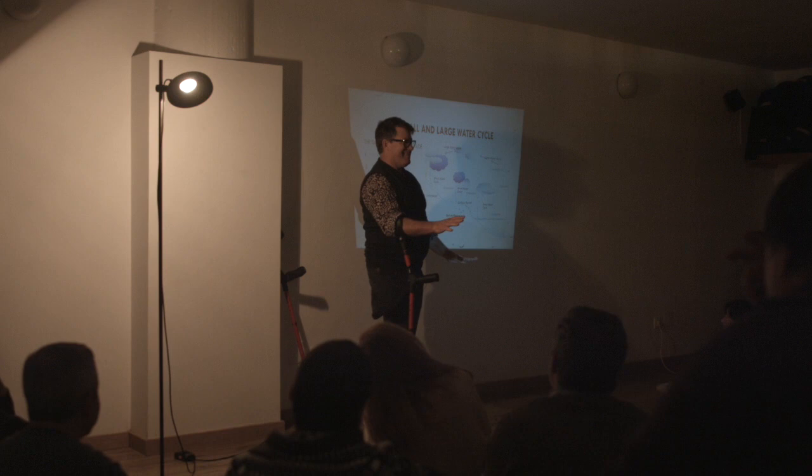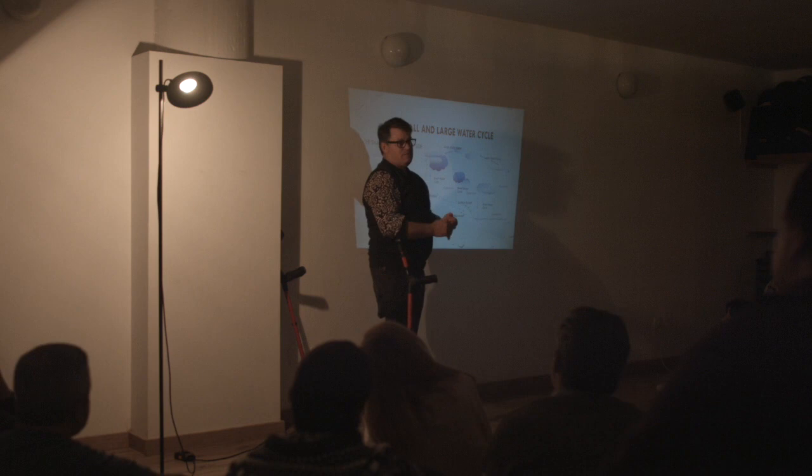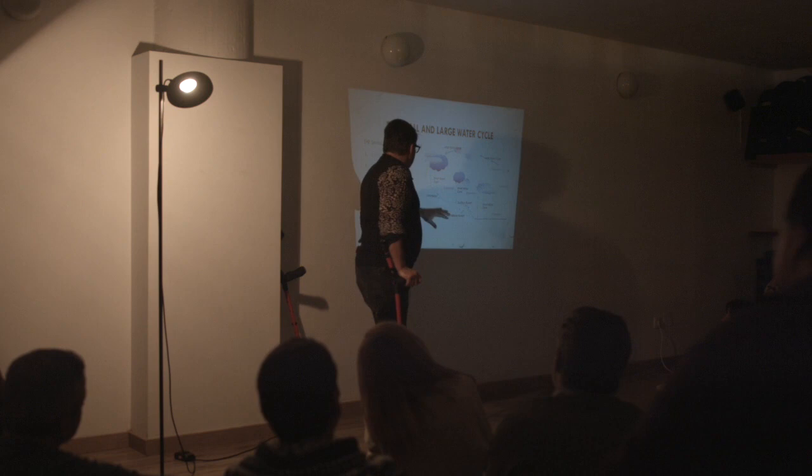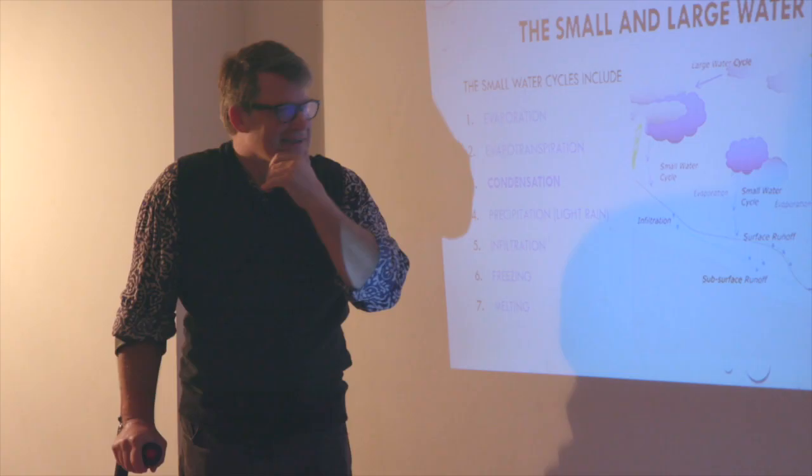When we have big rain, we have floods, we have erosion, and we have mudslides. But with the small water cycle, it manages that. It stops that stuff from happening, which I'll explain a bit later.